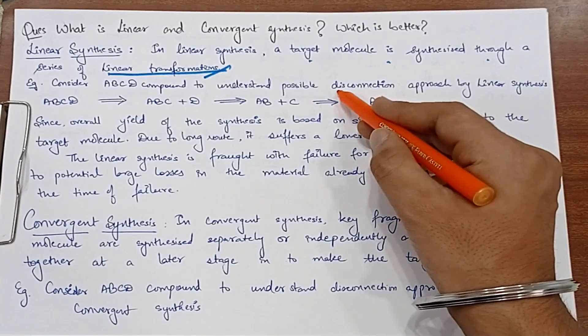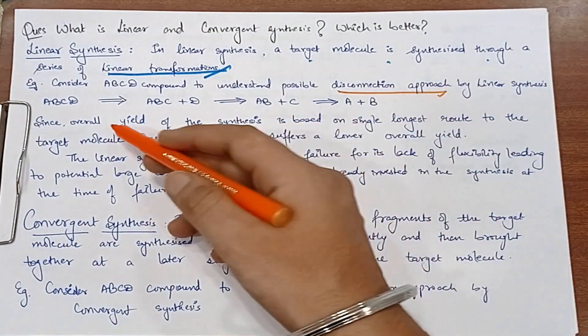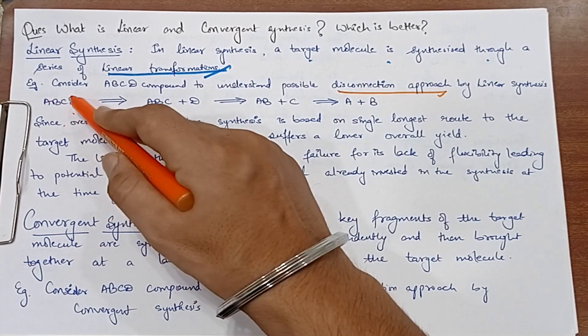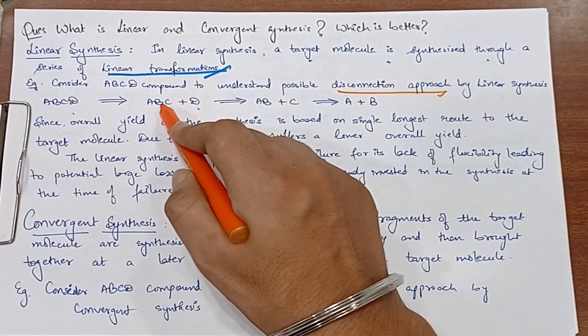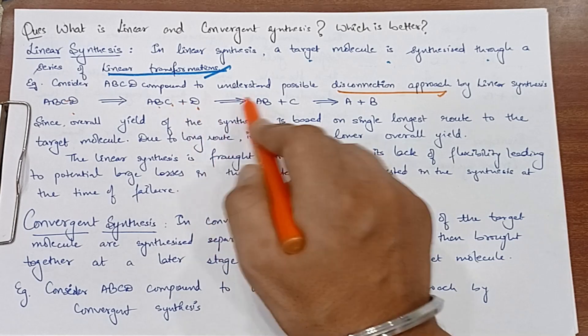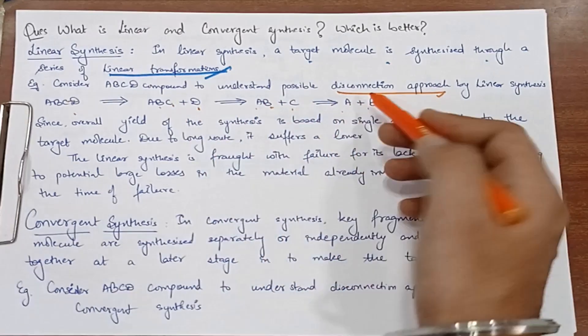Okay, so we will see disconnection approach by the linear synthesis. So ABCD, first it will break D, then ABC will break C, then AB will break and then A and B will break.